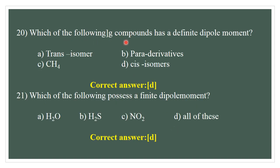Question number 20. Each of the following compounds has a definite dipole moment — methane has a dipole moment. The correct answer is D. Question number 21: Which of the following possess a finite dipole moment? A) Water, B) H₂S, C) NO₂, D) All of these. The correct answer is D — all of these.